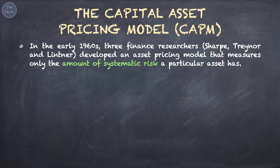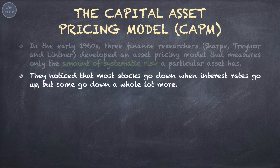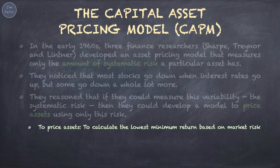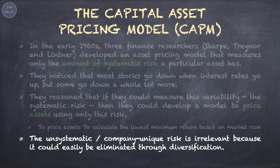In the early 1960s, three finance researchers, Sharpe, Treynor, and Lintner developed an asset pricing model that measures only the amount of systematic risk a particular asset has. They noticed that most stocks go down when interest rates go up, but some go down a whole lot more. They reasoned that if they could measure this variability — the systematic risk — then they could develop a model to price assets using only this risk. To price assets means to calculate the lowest minimum return based on market risk. The unsystematic risk, or company unique risk, is irrelevant because it could easily be eliminated through diversification.